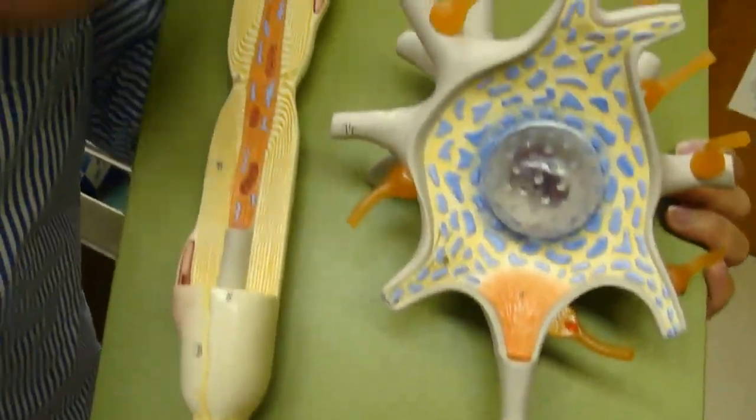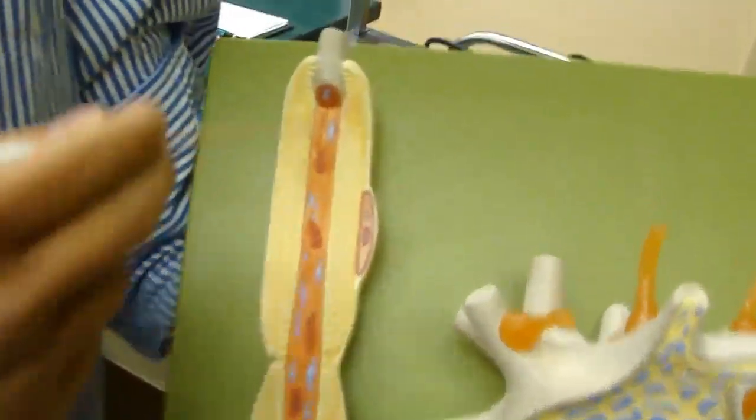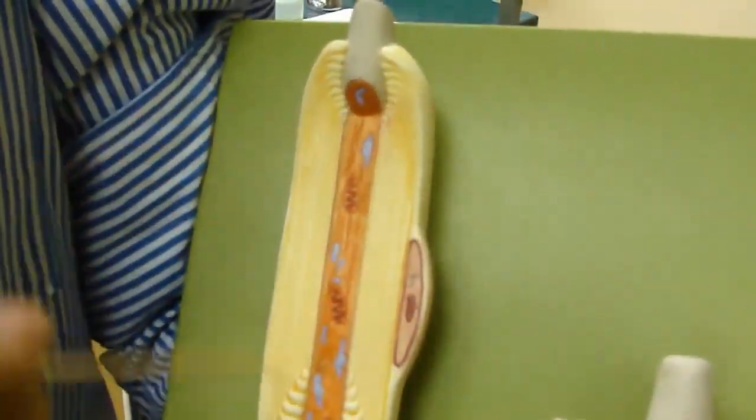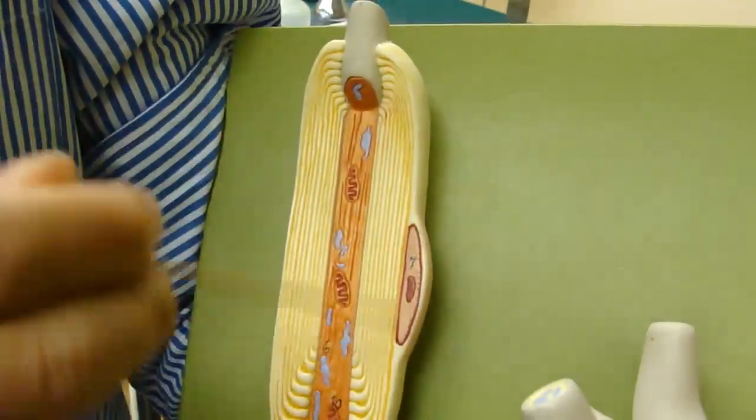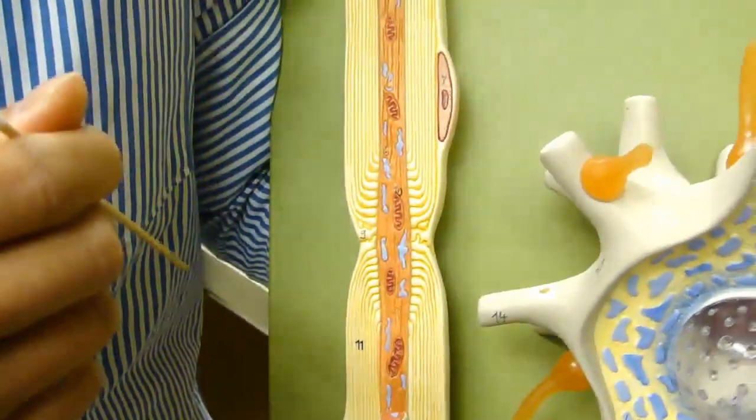So on this model it's a continuation of the axon on the other part of the neuron. So scroll straight down here, the axon is wrapped around by the Schwann cell. This is one Schwann cell, this is another Schwann cell and the Schwann cell is to speed up the conduction rate.